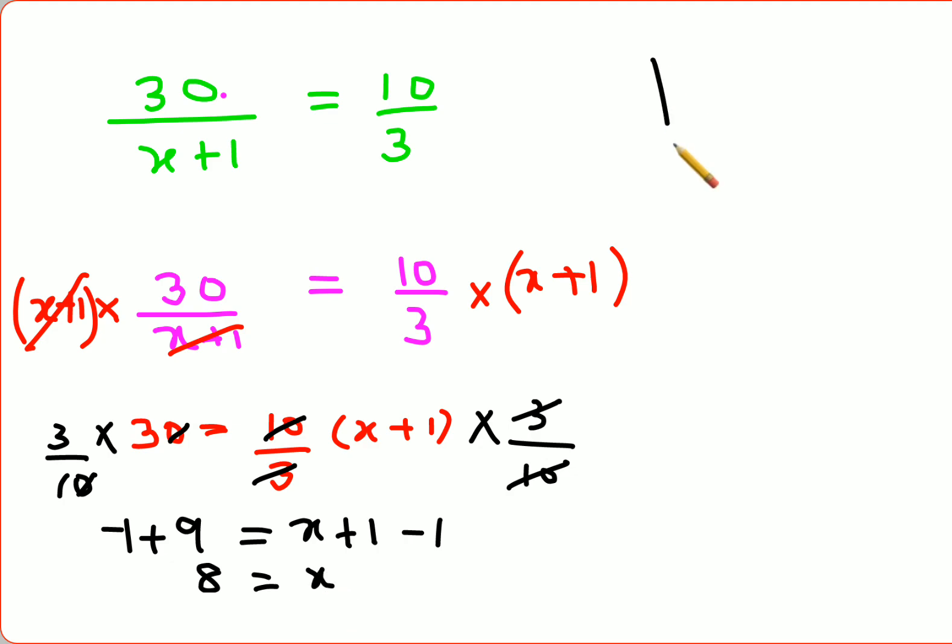This is also correct, but I will show you at this particular step only you could have done it, and it would have been so much easier. Like I said, when you have two fractions on either side of the equal to, you can directly cancel the numerators and directly reduce the denominators. If you look over here, there is no common factor between x plus 1 and 3, so we will keep them as is. Now if you see 30 and 10, I know that 10 completely divides 30 by 3. So this becomes 3 and this becomes 1.